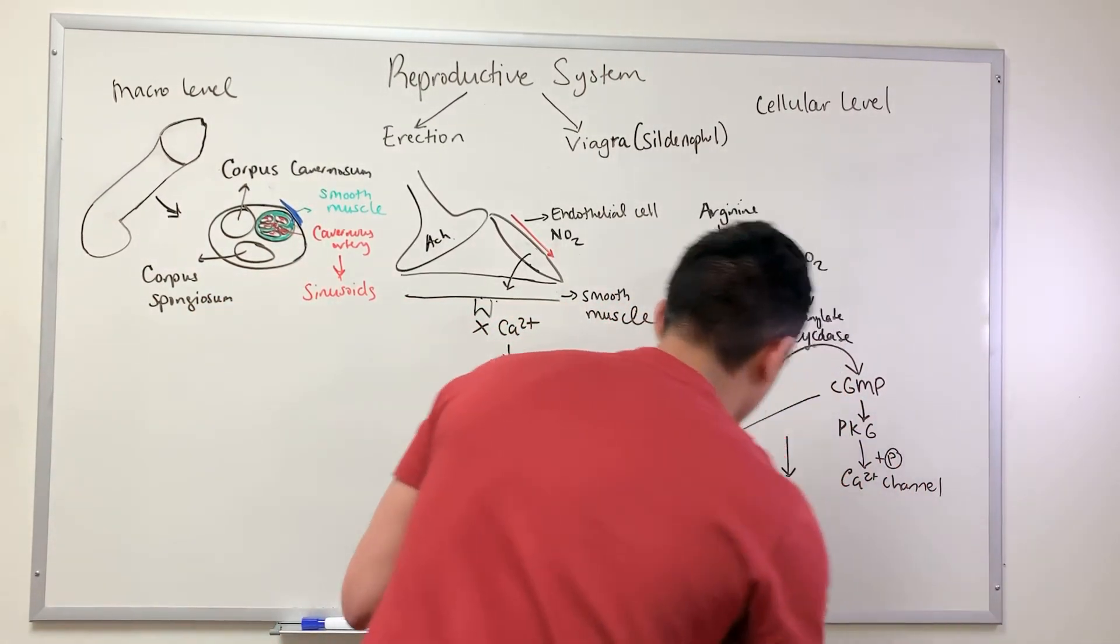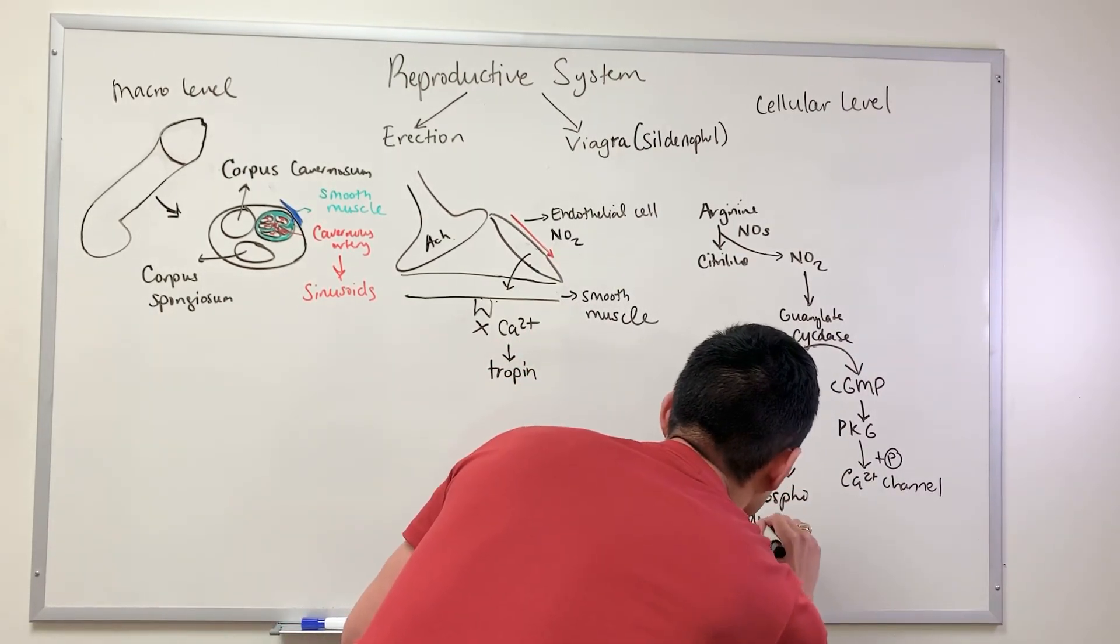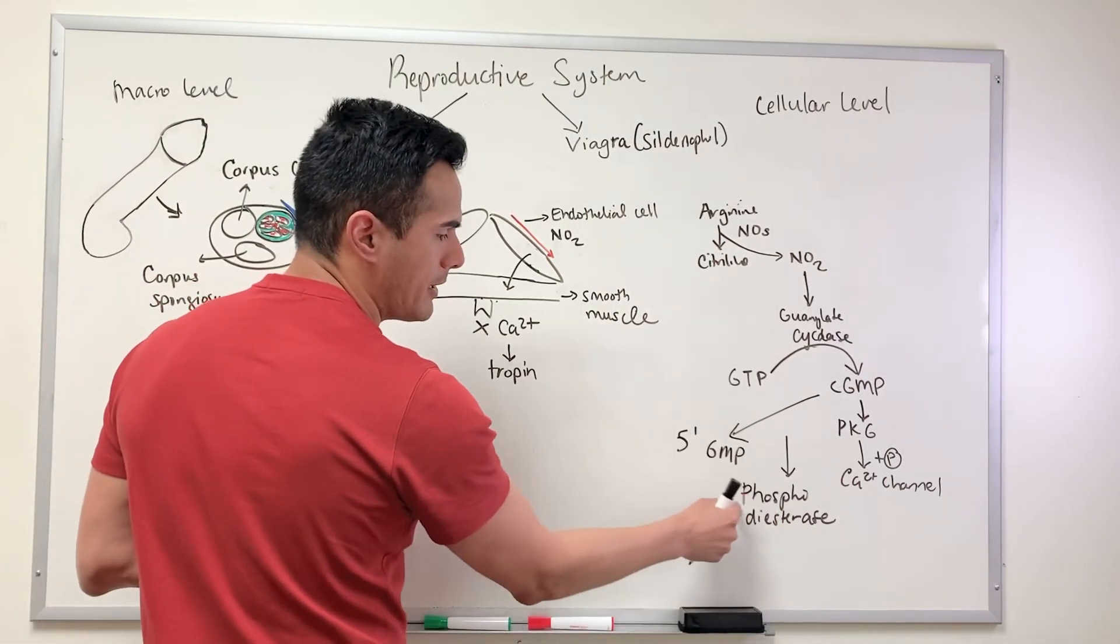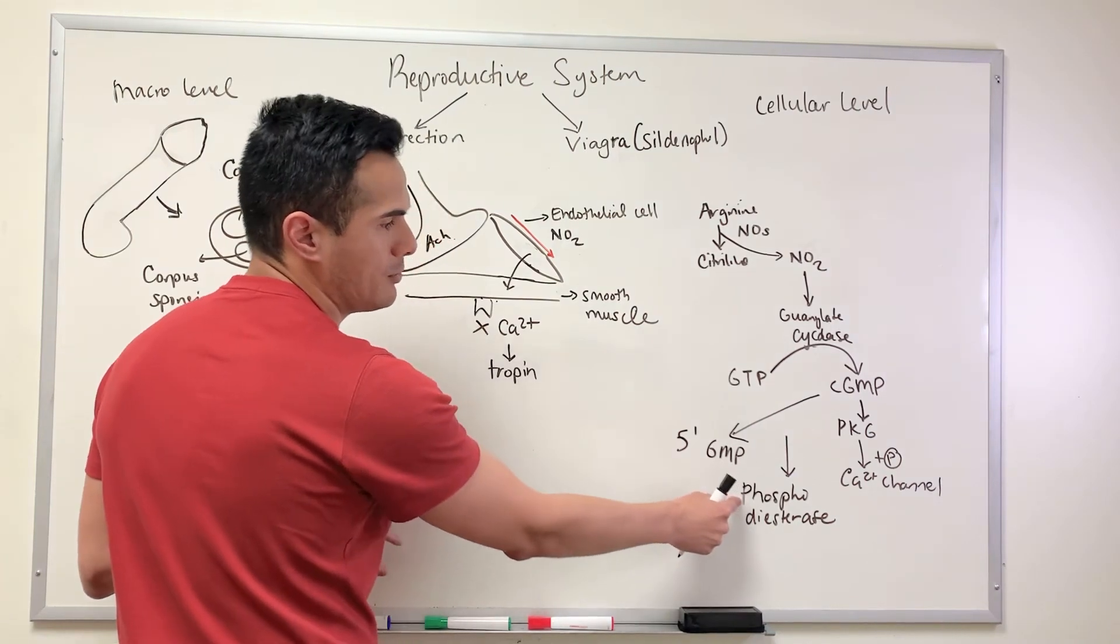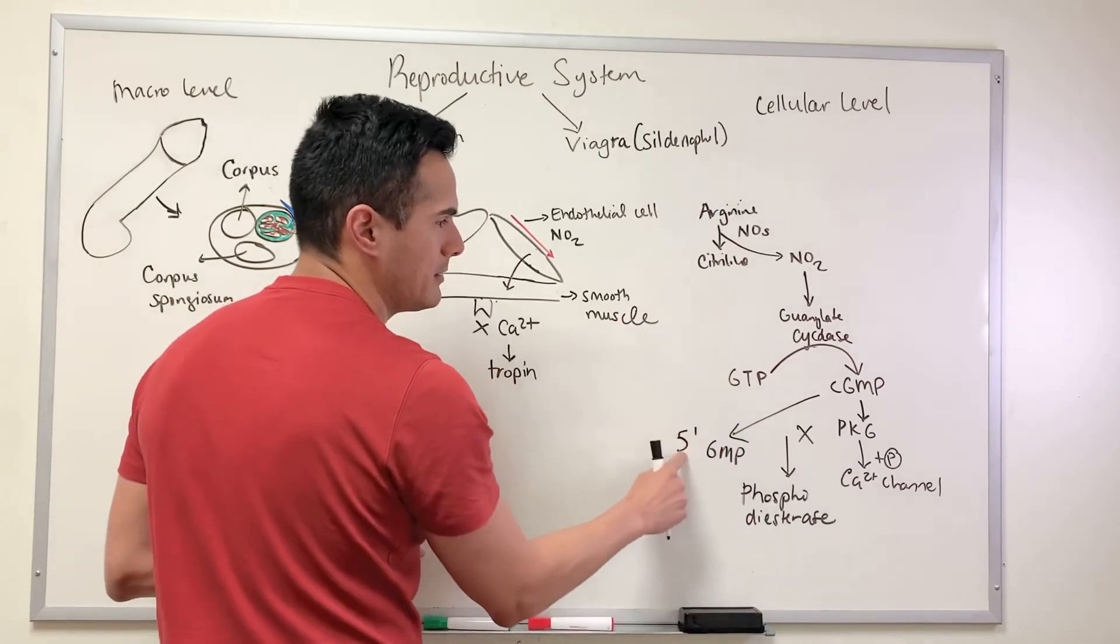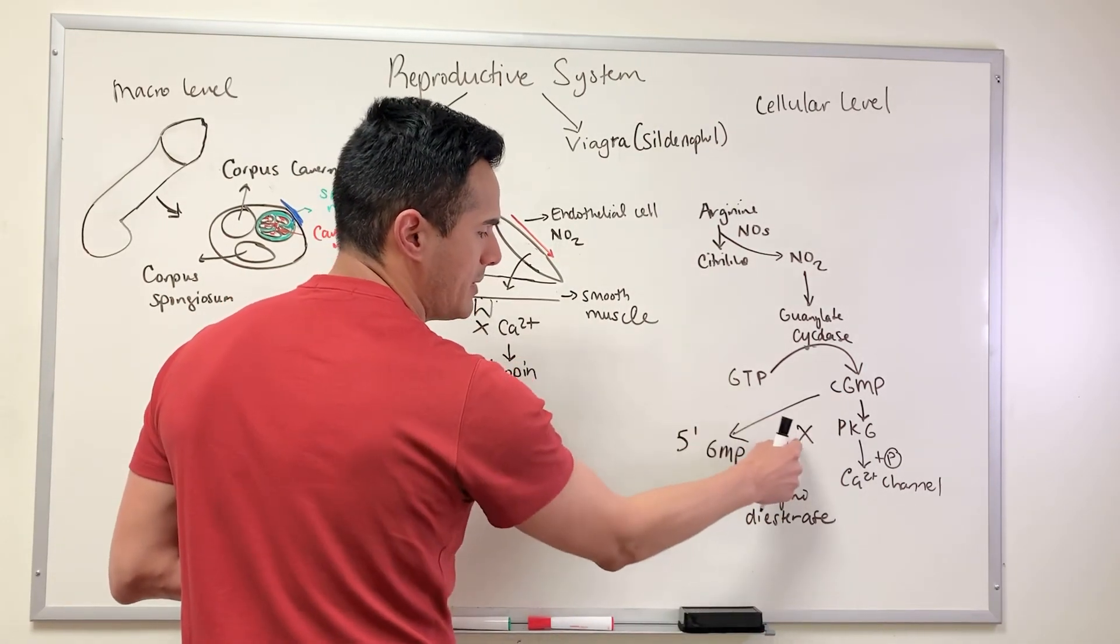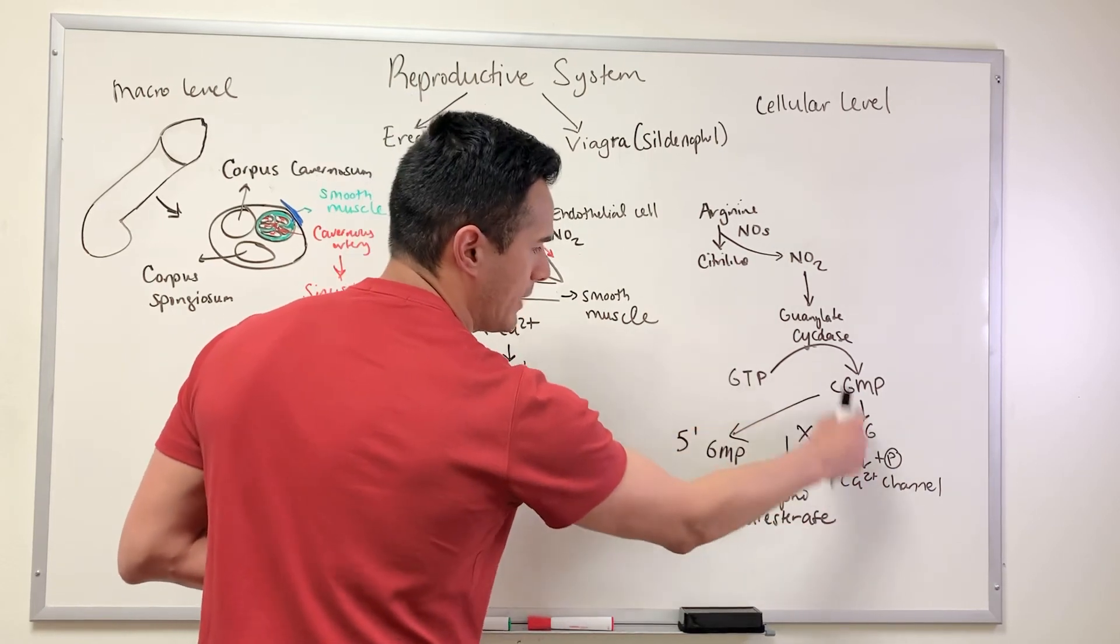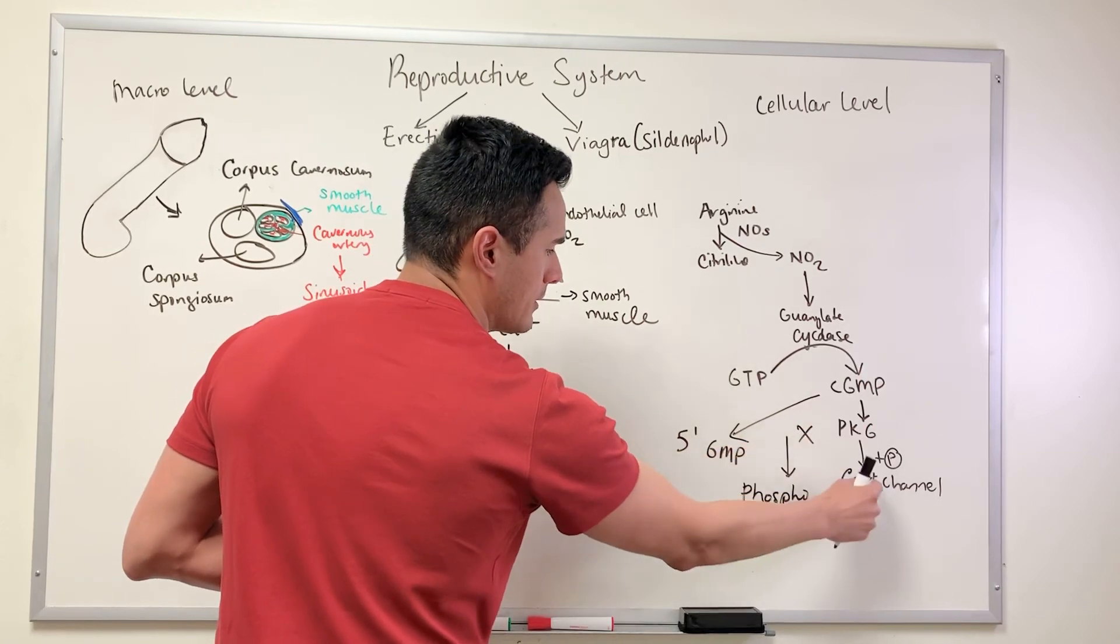The reason that we're targeting phosphodiesterase is to inhibit the degradation of cyclic GMP. Because if we can inhibit the degradation of cyclic GMP, this pathway can continue to happen.